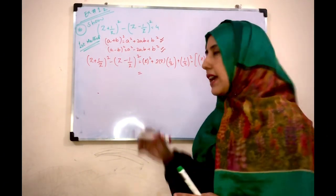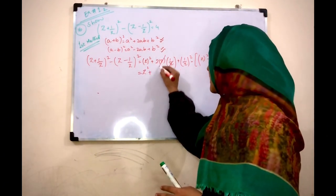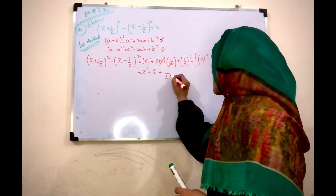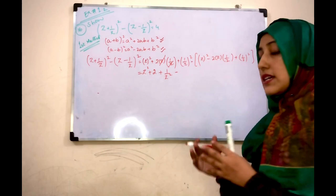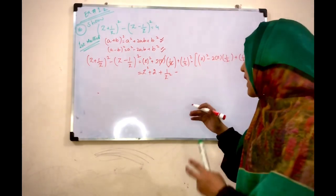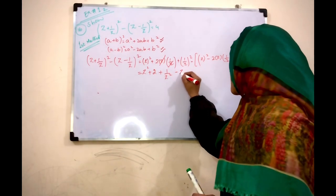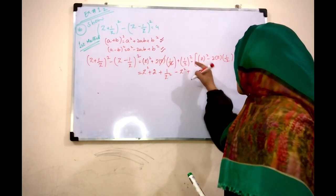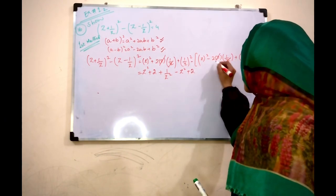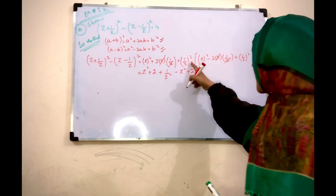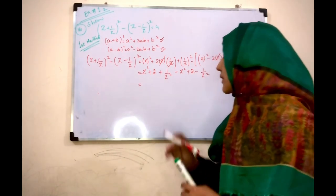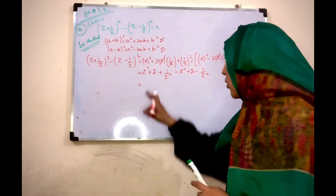Simplify this now. z² minus z² and z and z will cancel. Plus (1/z)² minus bracket. Inside the bracket we solve and multiply minus with the signs. z² minus becomes plus. 2 cancels, plus and minus becomes minus (1/z)².